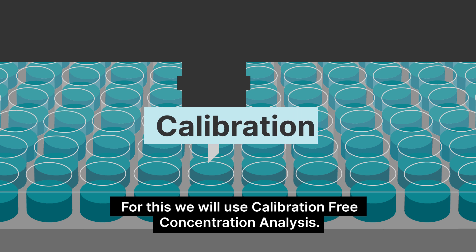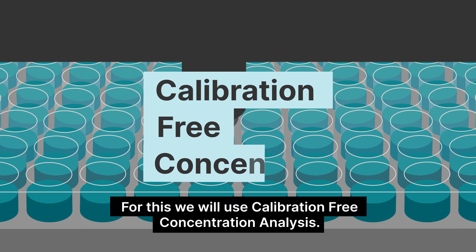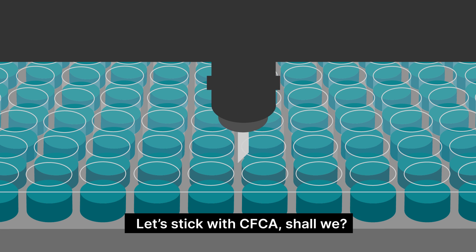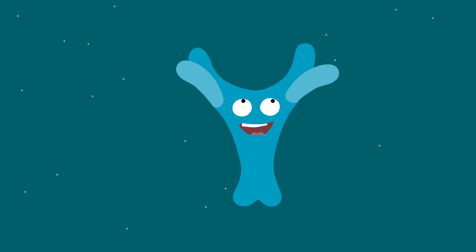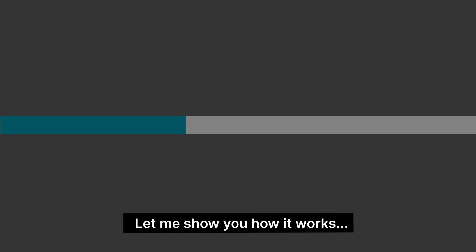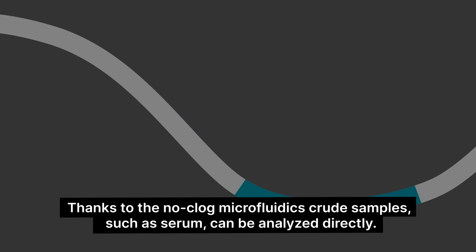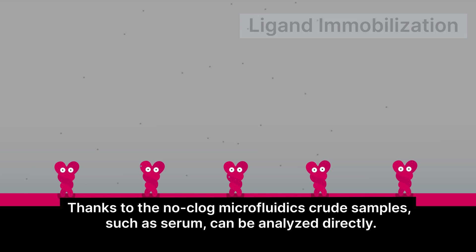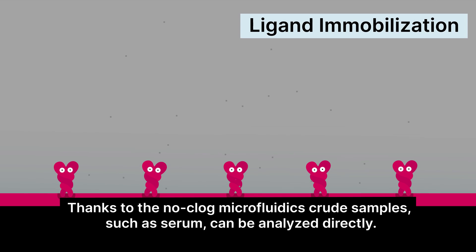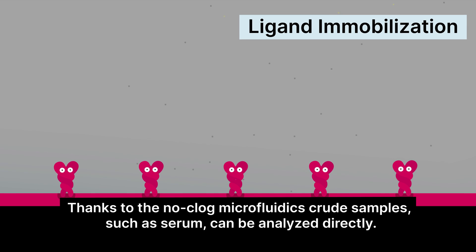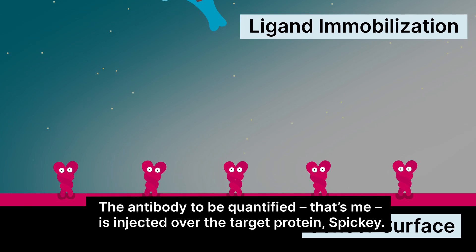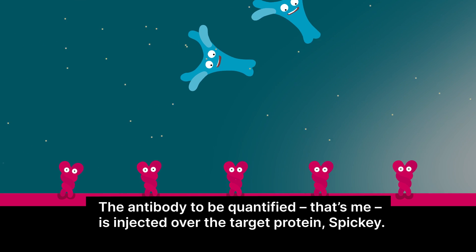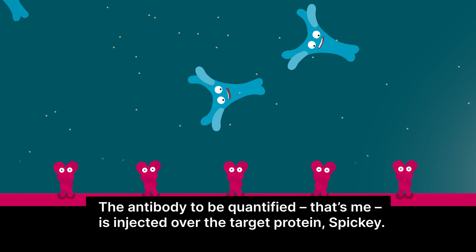For this we will use calibration-free concentration analysis — let's stick with CFCA, shall we? Let me show you how it works. Thanks to the no-clog microfluidics, crude samples such as serum can be analyzed directly. The antibody to be quantified — that's me — is injected over the target protein Spiky.